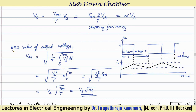Proceeding further, the RMS value of the output voltage is the square root of (1/T) times the integral from 0 to T-on of Vs² dt. Since Vs² is constant, this gives square root of (Vs² × T-on / T), which simplifies to Vs × square root of (T-on / T) = Vs × √alpha.